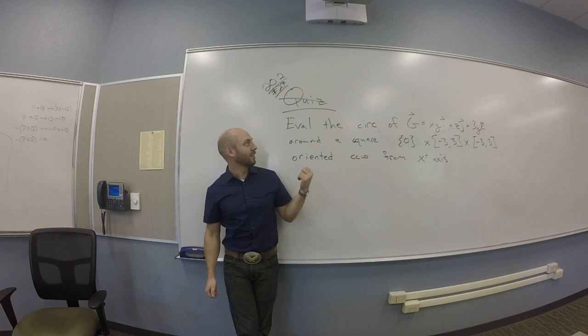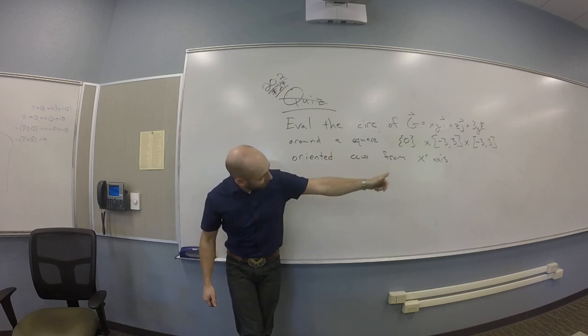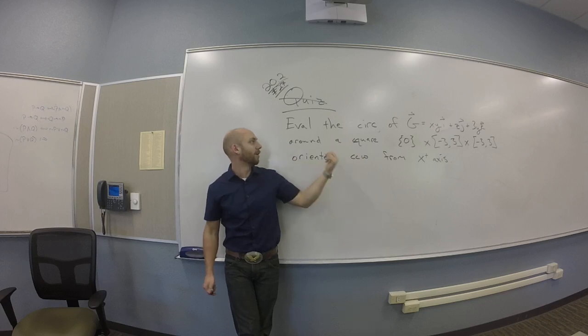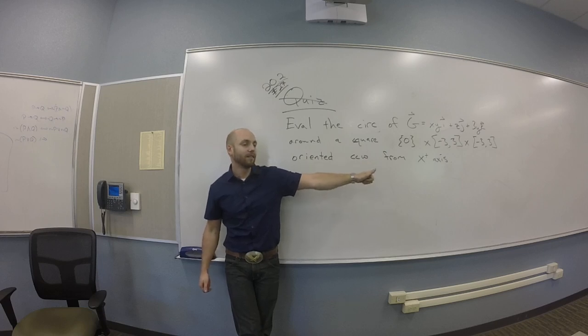So I'm supposed to calculate the circulation of a vector field xy, z, 3y around a square that's 0 by negative 3, 3 by negative 3, 3. So that's in the yz plane.